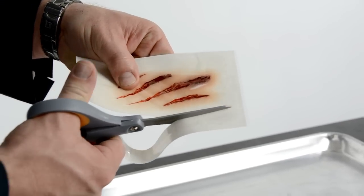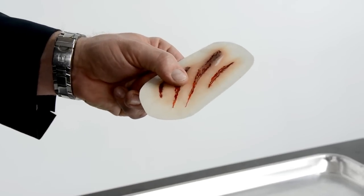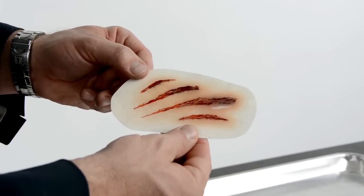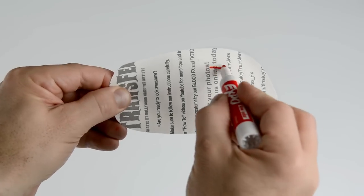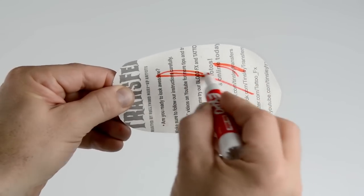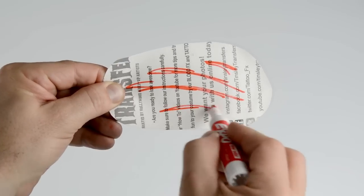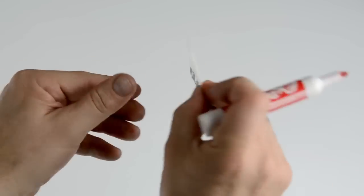Next you want to cut around the piece being careful not to cut into the edge of your transfer. Here's a tip: hold your piece up to the light and take a permanent marker or pencil, making the shape of the wound or scar. This will help you be more precise with the placement of your transfer.